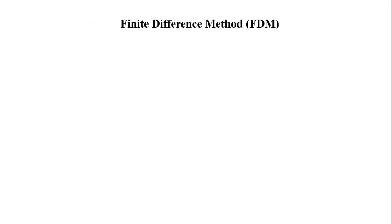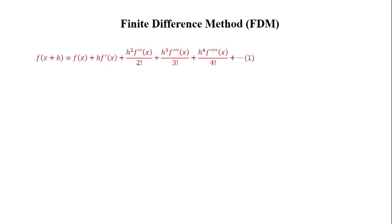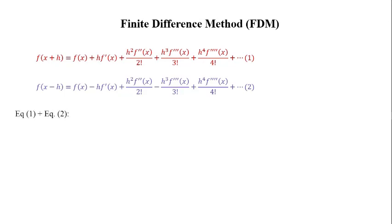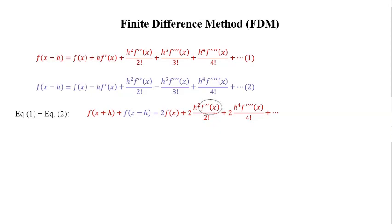To express f''(x), we use equations 1 and 2 with additional terms included. Adding equation 1 and equation 2, the left-hand side gives f(x+h) + f(x−h), and the right-hand side gives 2·f(x) + 2·h²/2! · f''(x) + 2·h⁴/4! · f''''(x) + additional terms.